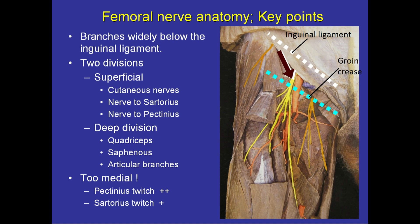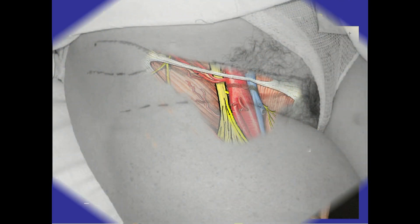A nerve block of the deep division alone will fail to anesthetize the skin over the anterior thigh and the knee, while a nerve block of only the superficial division may fail to block the knee joint capsule and the quadriceps muscle. Best femoral nerve block success results from performing the nerve block just below the inguinal ligament before this extensive nerve branching occurs.